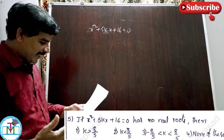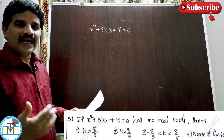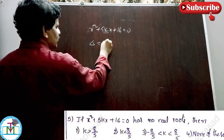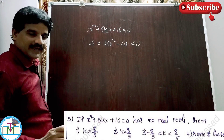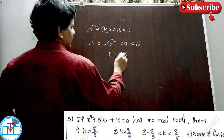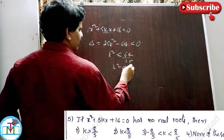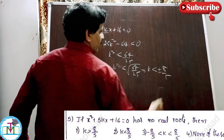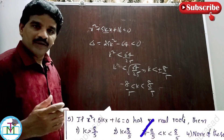Question number 5: If x² + 5kx + 16 = 0 has no real roots, find the range of k. No real roots means discriminant < 0. Δ = b² - 4ac = 25k² - 4(1)(16) = 25k² - 64 < 0. So 25k² < 64, giving k² < 64/25. Therefore k < ±8/5, meaning k lies between -8/5 and 8/5. Option 3 is the right answer.